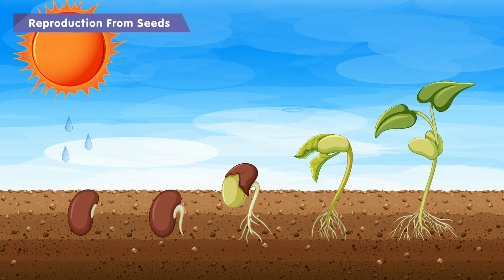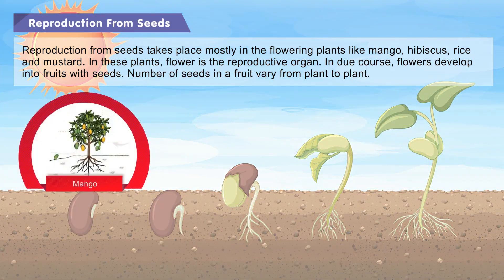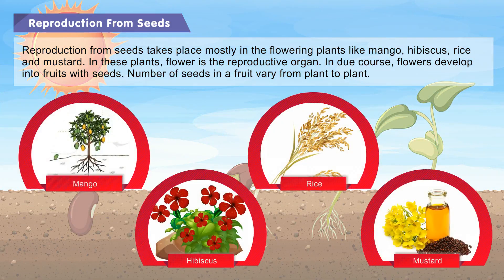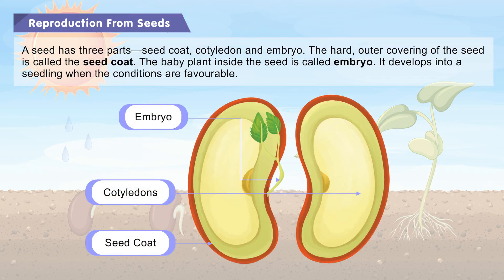Reproduction from seeds takes place mostly in the flowering plants like mango, hibiscus, rice, and mustard. In these plants, the flower is the reproductive organ. In due course, flowers develop into fruits with seeds. The number of seeds in a fruit varies from plant to plant. A seed has three parts: seed coat, cotyledon, and embryo.